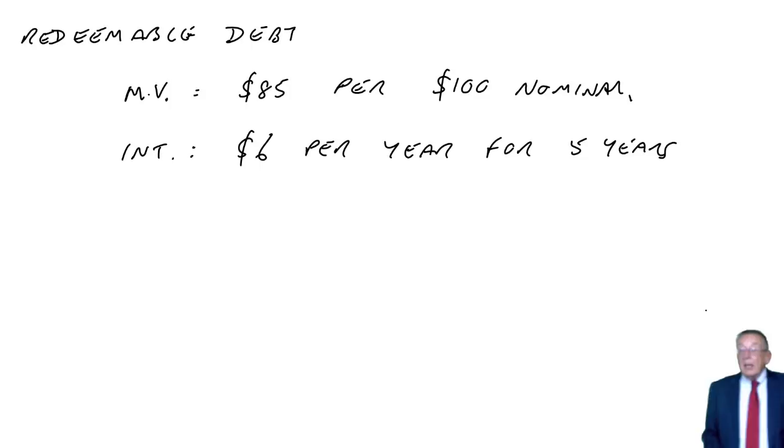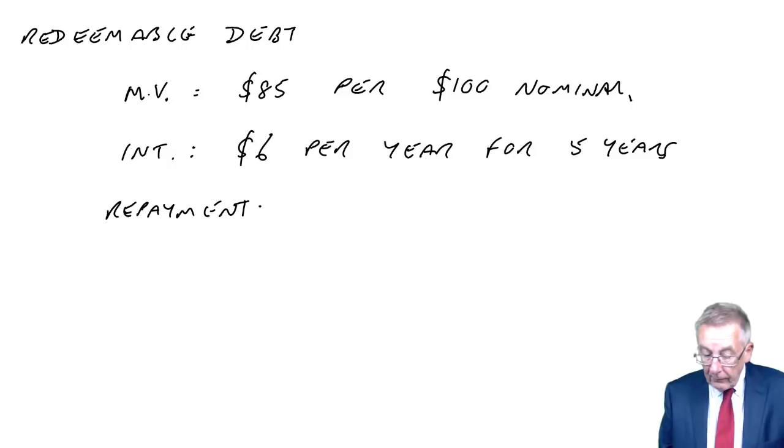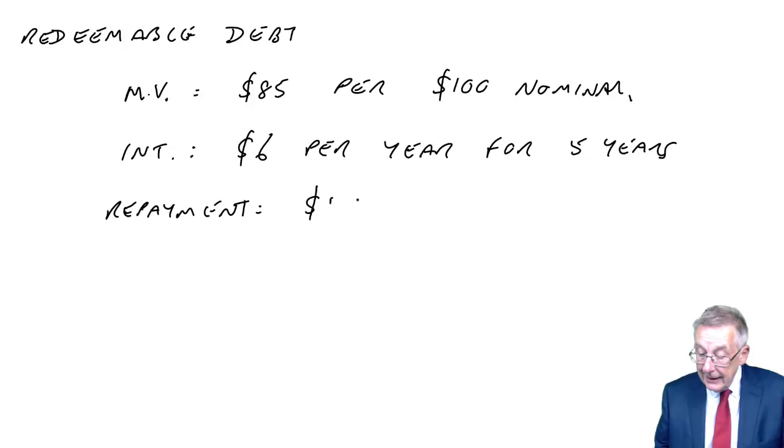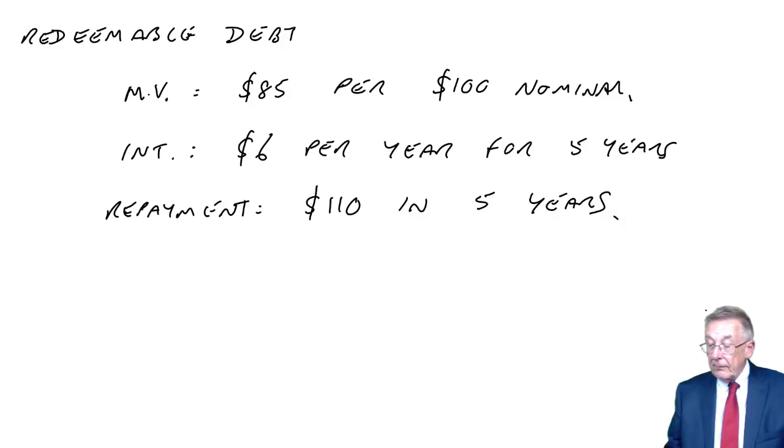And so, there will be a repayment. In 5 years' time, they'll be repaid at a premium of 10%. And what that means is, the repayment, the nominal value was 100. If they repaid at a premium, the premium is on nominal value. So, given they have 100 nominal value, the repayment here would be 110 in 5 years' time. If there's no mention of a premium, then fine, the repayment would be nominal value, which in this case would be 100.